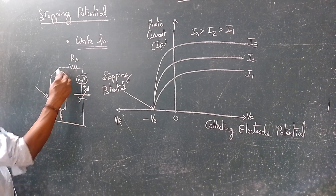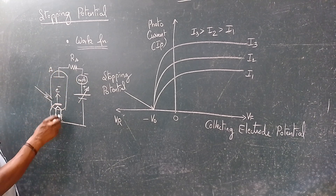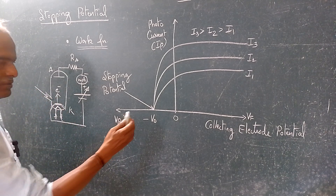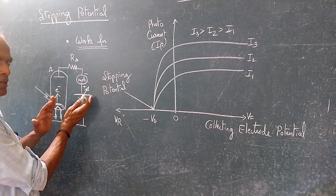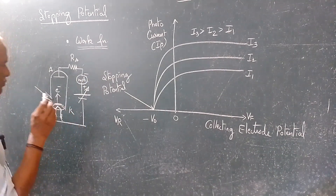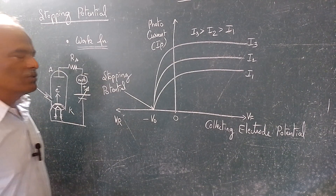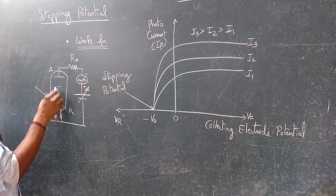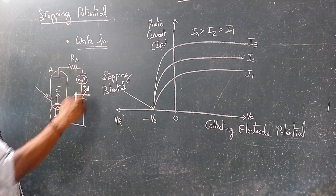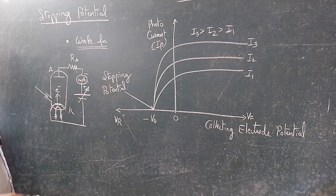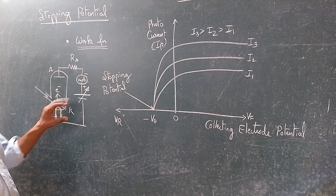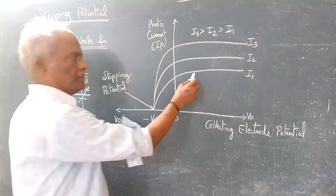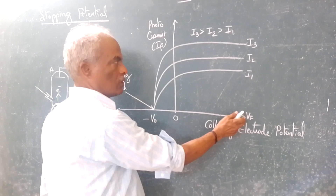This is forward bias — positive is connected to the anode, which is the anode, and this is the cathode. As the intensity of the light increases above zero volts, the photo current also increases. The photo current is the number of electrons that travel from cathode to anode, completing the circuit, which we can see in the milliamps meter. For a particular potential that you have set, the number of photo electrons depends on the intensity of light given. This is forward voltage and forward current.